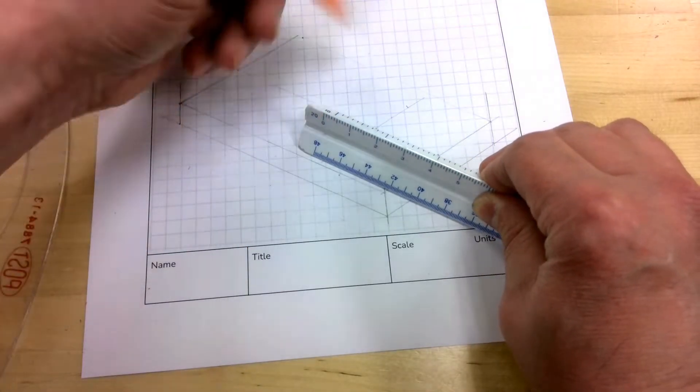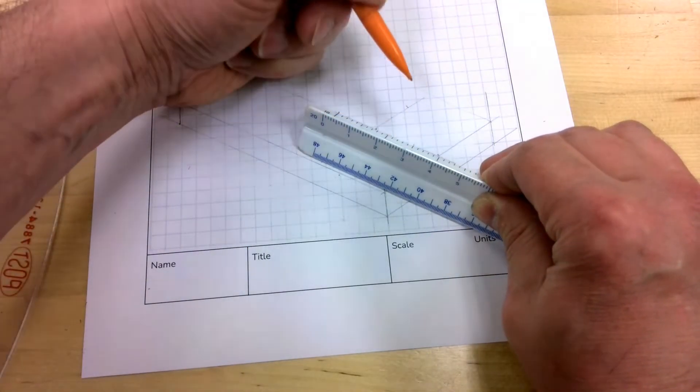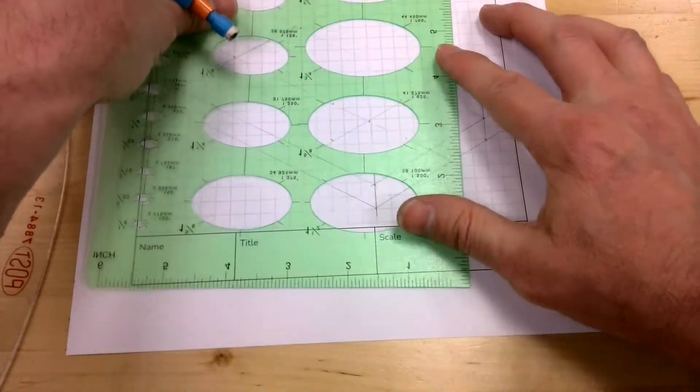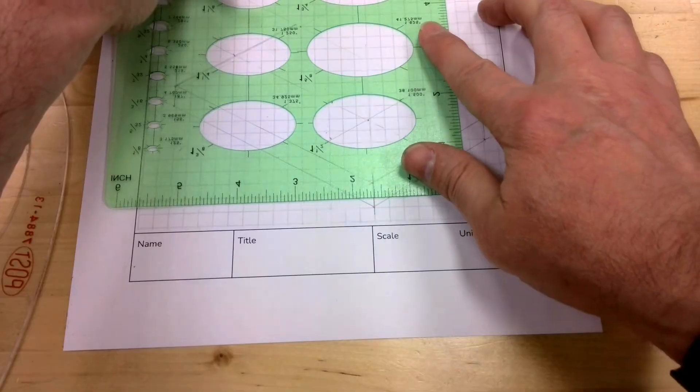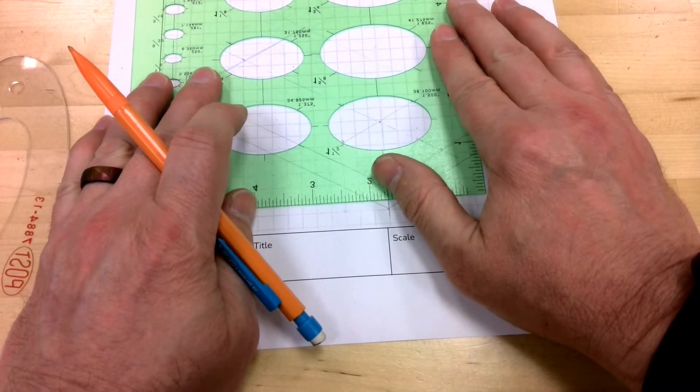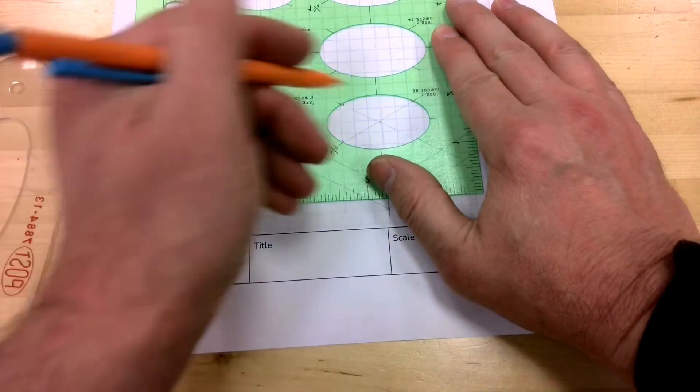And you can see that makes an ellipse there. So one technique would be to mark our bounds here and if we can find the right one that lines up using our center lines. This one here looks pretty close. It just so happens that my template says it's a 1.5 inch ellipse.